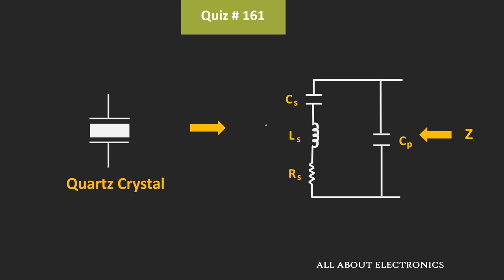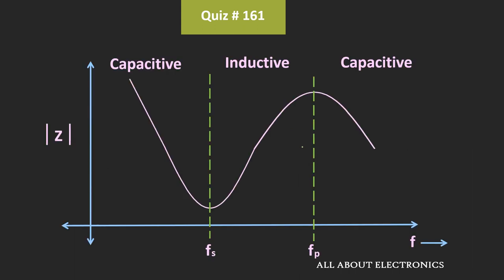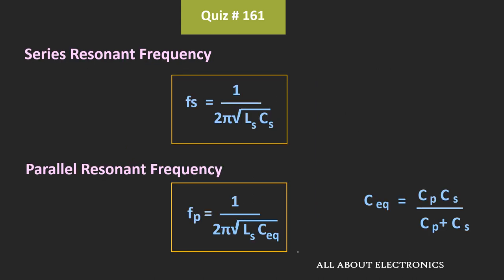For the quartz crystal, if you see the electrical equivalent circuit, then it can be represented like this. And if you see the equivalent impedance of this quartz crystal, then with frequency it will vary like this. Whenever this impedance is minimum, at that time we will get the series resonant frequency. And similarly, whenever the impedance becomes maximum, at that time we will get this parallel resonant frequency. These are the expressions of the series and the parallel resonant frequencies.